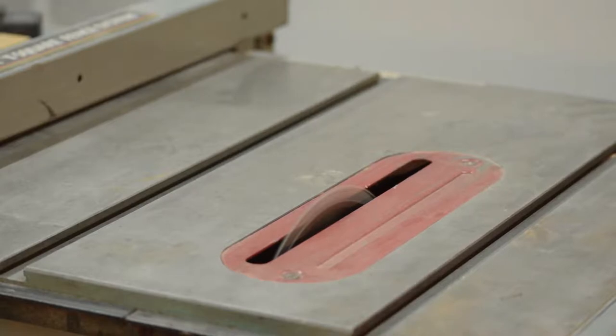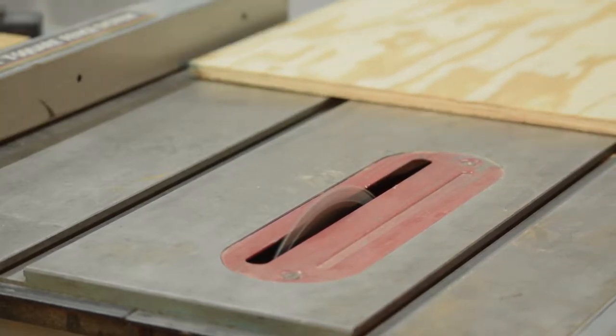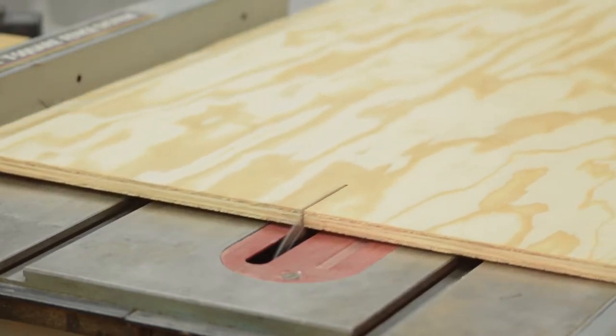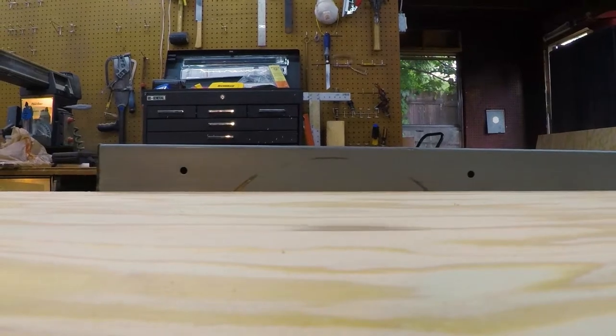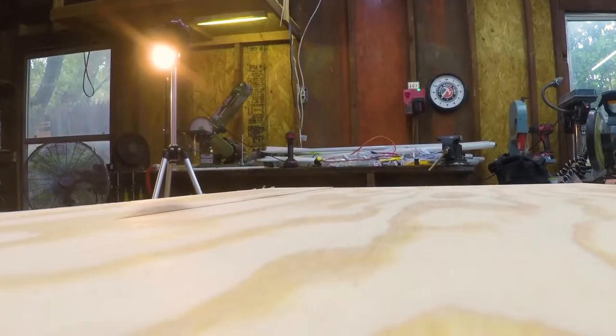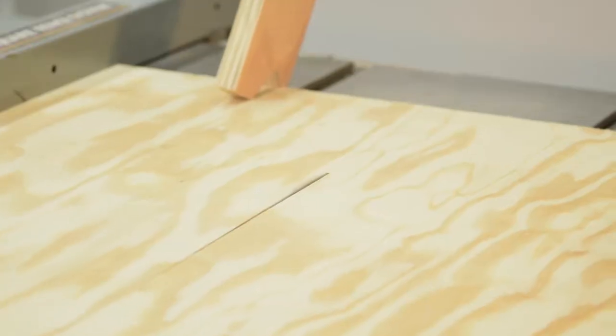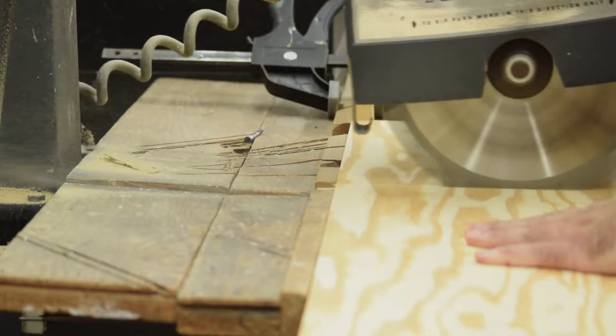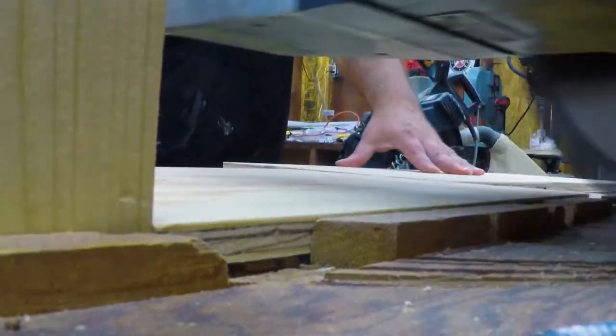My wife was organizing a cakewalk booth at the VBS carnival and she asked me to make the number squares. She wanted them to be sturdy enough for people to walk and stop on, reusable, and not break the bank. So I got a sheet of half-inch plywood, used half of it, ripped that down into 11-inch strips, and then cross cut into 11-inch squares, and I made 16 of them.